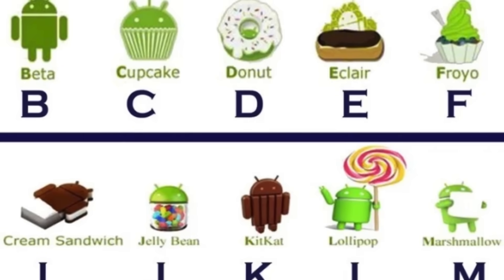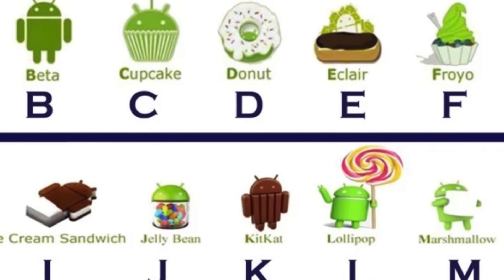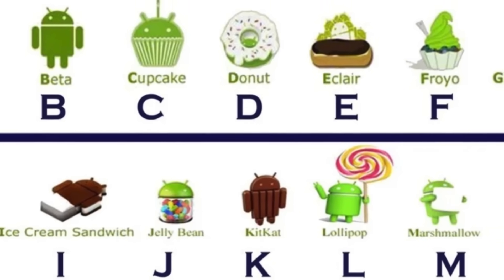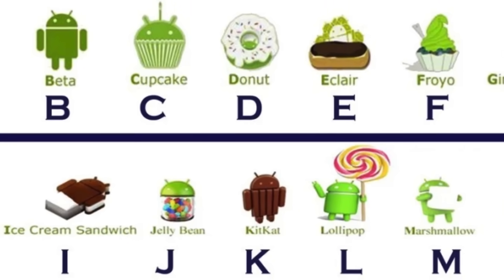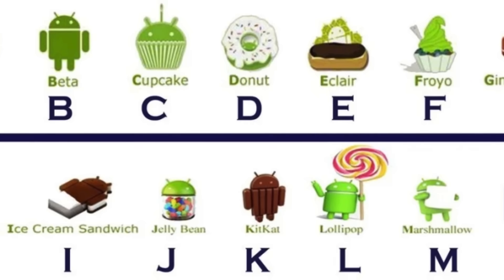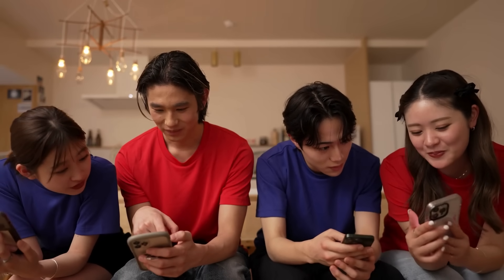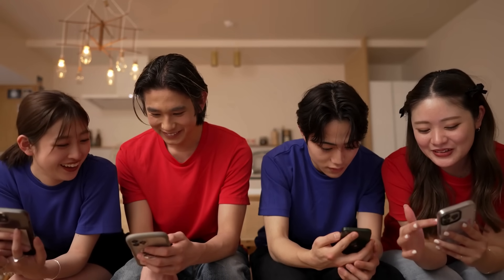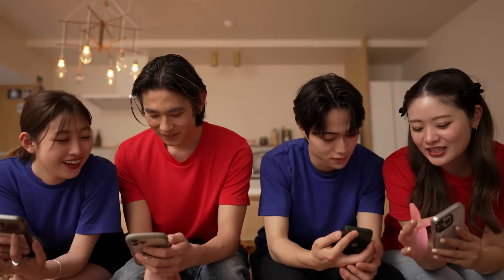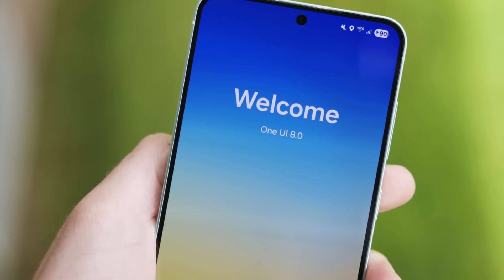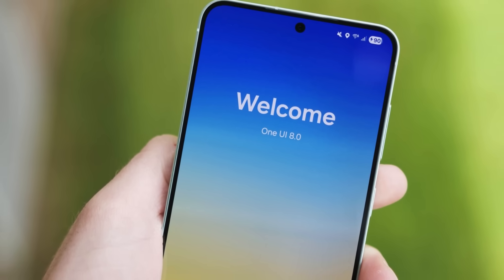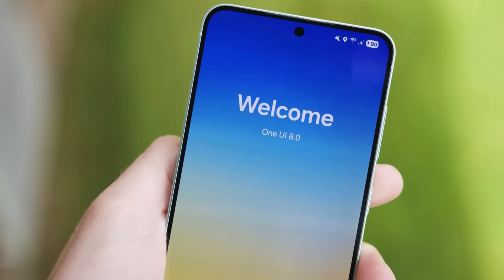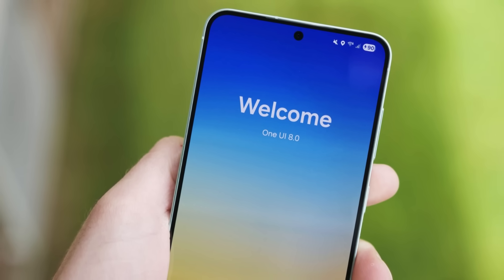Each name corresponded to a version of Android, and every one of them followed the alphabet — C, D, E, F, G, and so on. The alphabetical order became another layer of fun for users who loved guessing what the next dessert name would be. It wasn't just a naming convention; it was a tradition that Android fans looked forward to with every update.